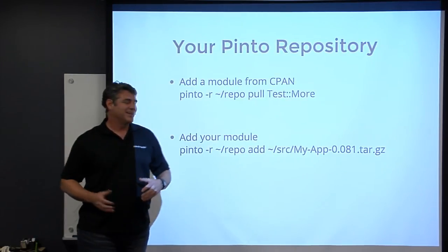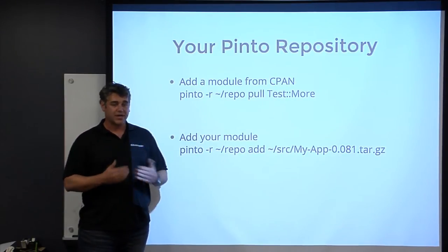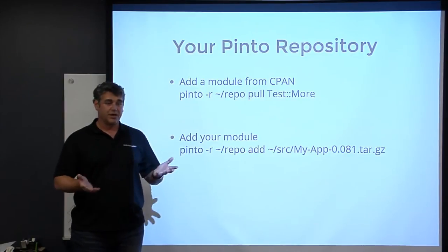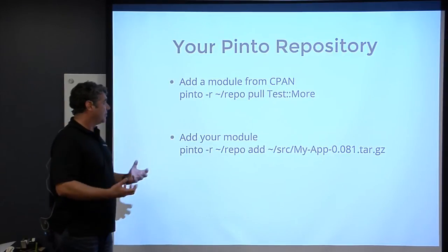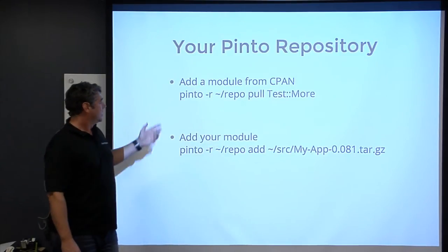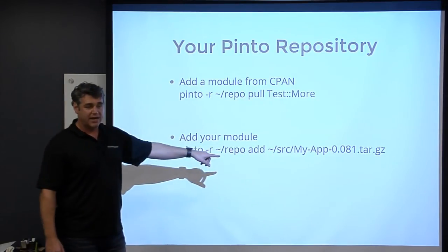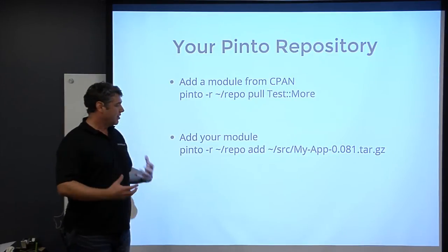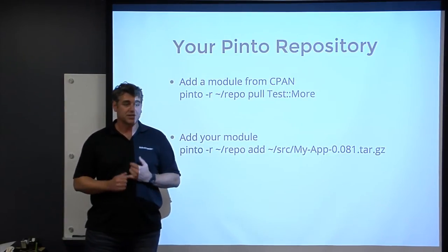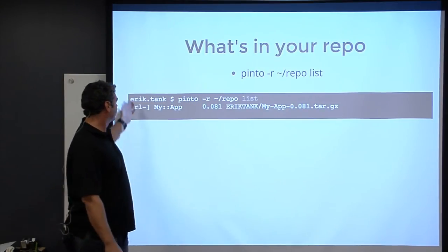Once you've created your repository - one thing I forgot to mention: when you run 'pinto init' it will create the directory if it doesn't exist; if it does exist and it's not empty it will throw an error. To populate it, if you want a module from CPAN use the pull command: 'pinto pull Test::More'. If you want to add locally, use the 'add' command and give it the path to your tarball - it must have the standard module structure and metadata. To see what's in your repo, just do a 'list'.